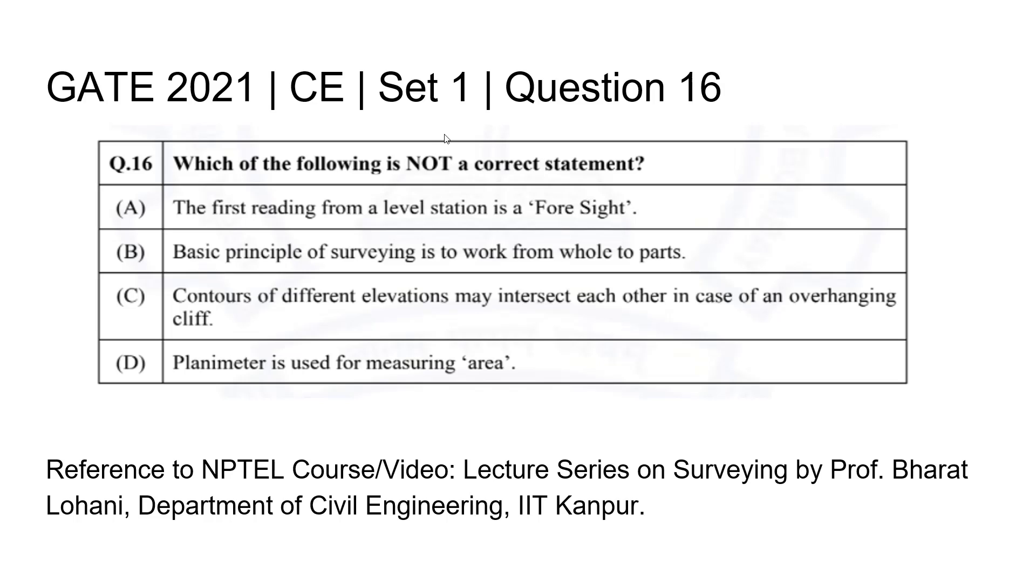GATE 2021 Civil Engineering Set 1, question number 16: Which of the following is NOT a correct statement? We need to find the incorrect statement. Option A: The first reading from a level station is a foresight.